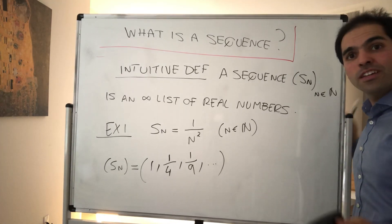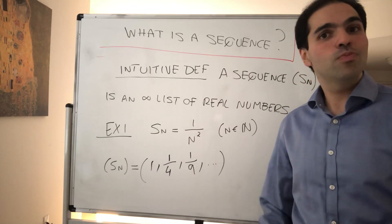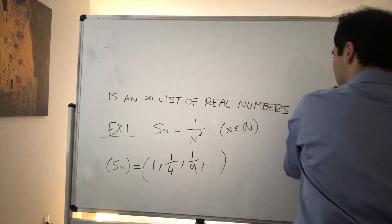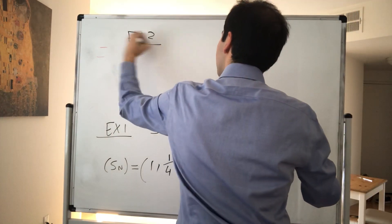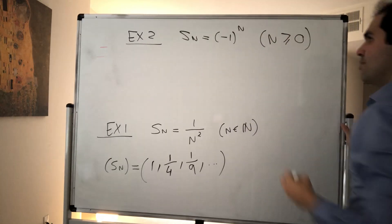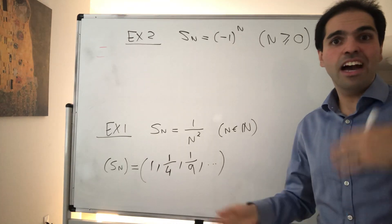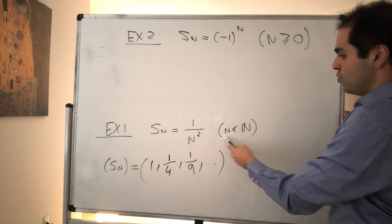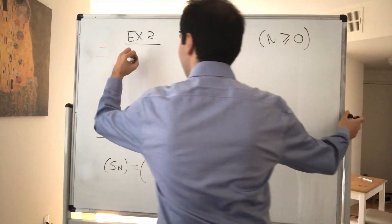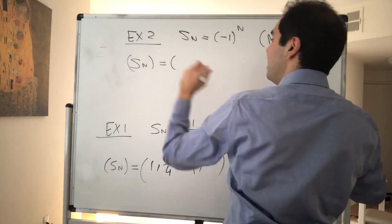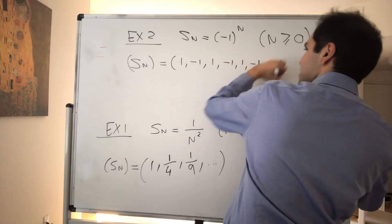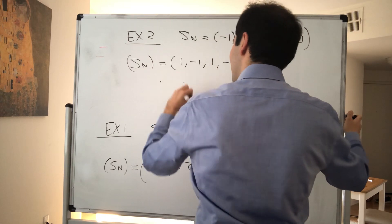The next example is very important because it's a good source of counterexamples — that is, when you want to show a statement is false. That's the sequence (-1)^n, where n ≥ 0. One thing to understand: we have some leeway here — n can start with 1, or sometimes n starts with 0. In that case the sequence is (-1)^0 = 1, (-1)^1 = -1, 1, -1, 1, -1, and so on. In other words, it just jumps back and forth between 1 and -1.